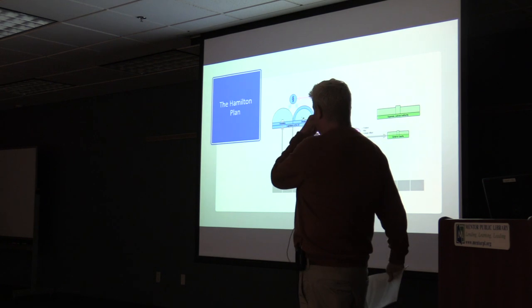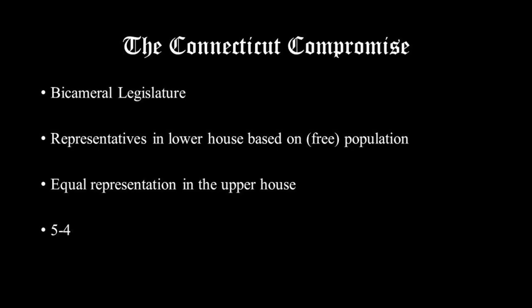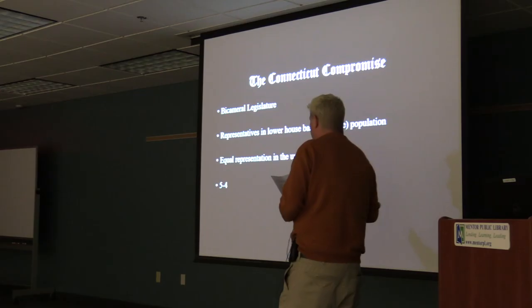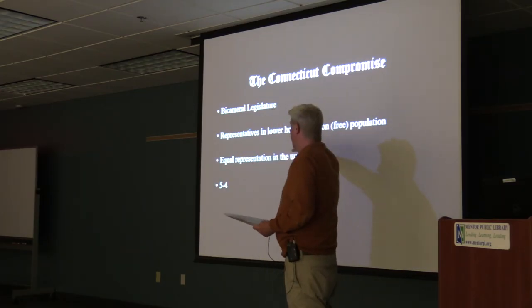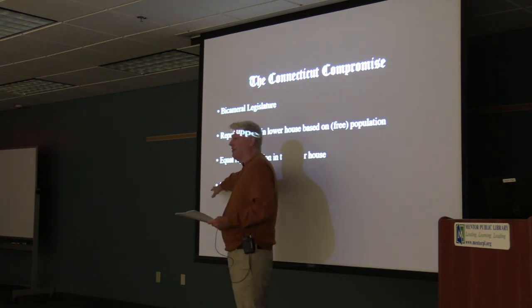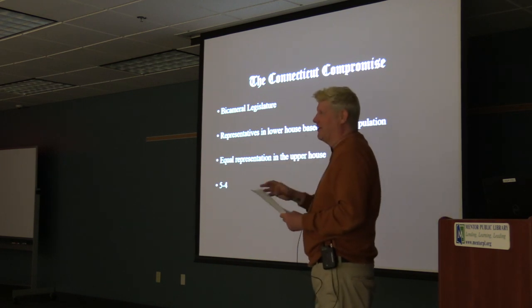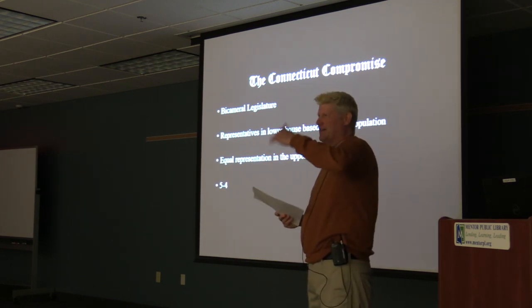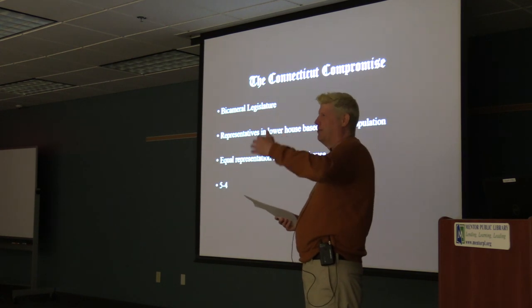What eventually gets decided is the Connecticut Compromise: a bicameral legislature, with a lower house elected on population proportion, and an upper house where each state is equally represented with two representatives, those representatives elected by the state legislature. Popular election of senators didn't come around for a long time. In July, North Carolina switches its vote, partly because the North Carolinians were convinced that the three-fifths compromise was actually going to happen.